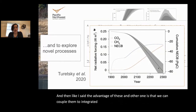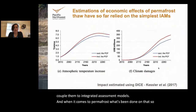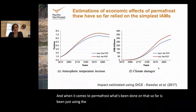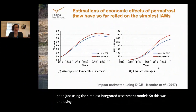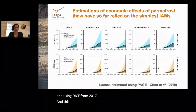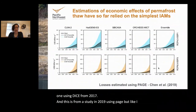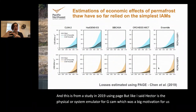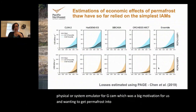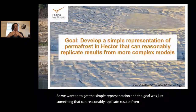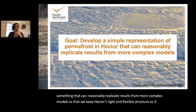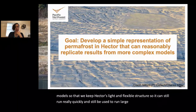The goal was a simple representation that can reasonably replicate results from more complex models while keeping Hector's light and flexible structure so it can still run quickly, support large ensembles, and couple with GCAM. We added an extra land carbon pool that basically doesn't do anything except thaw — it thaws as a function of high-latitude temperatures — and when it thaws we move it into a thawed soil carbon pool that can decompose into CO₂ or methane emissions. We kept it separate from Hector's other soil pool because that pool only decomposes into CO₂.